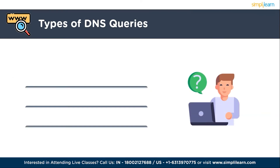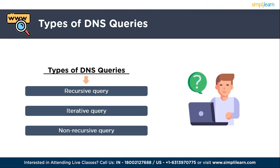There are three types of DNS queries. The first is the recursive query. Imagine you are asking for directions and you insist the person must provide the exact location. Similarly, in a recursive query, a DNS client asks a DNS recursive resolver to either provide the exact information it's seeking — the requested resource record — or return an error message if the information isn't available.